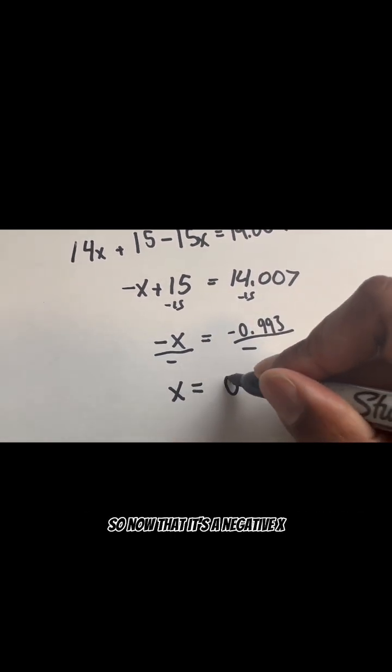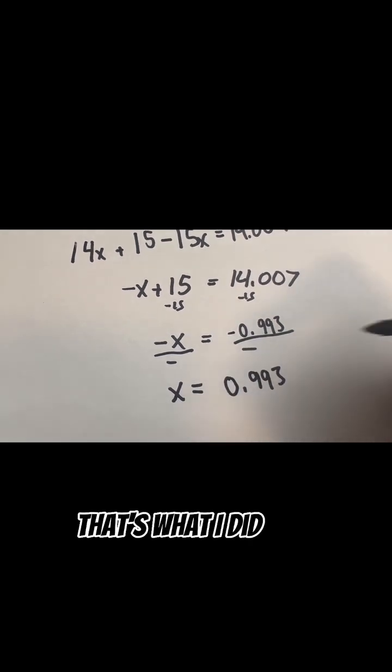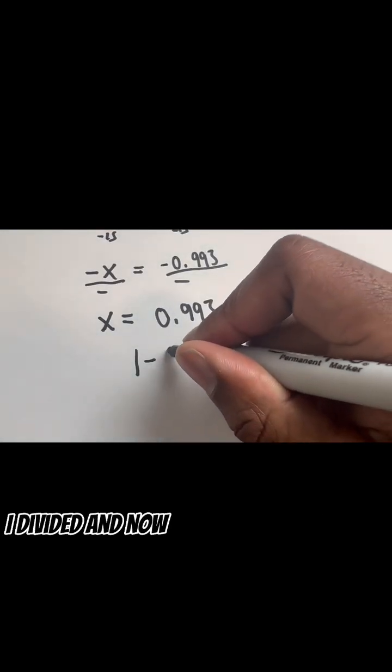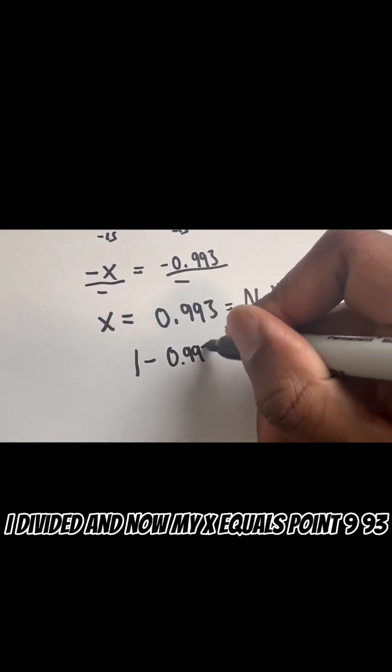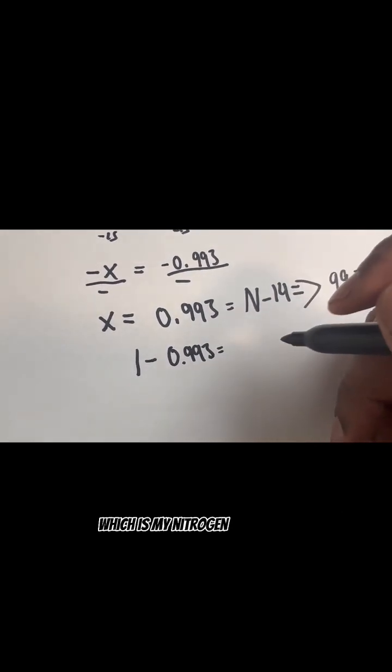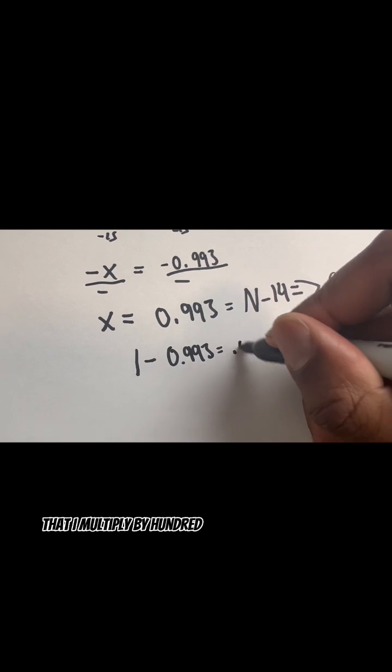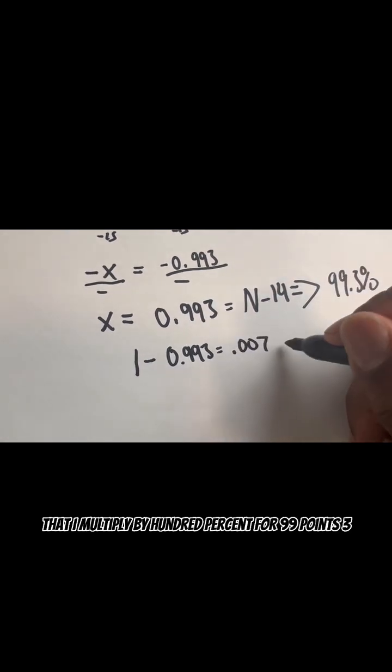So now that it's a negative x, we need to make sure that it's going to be positive. So that's what I did here, I divided it. And now my x equals 0.993, which is my nitrogen-14 percent abundance that I multiply by 100% to get 99.3%.